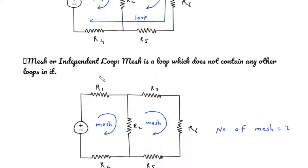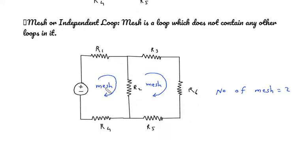What is mesh? Mesh or independent loop. Mesh is a loop which does not contain any other loops in it. So this is a mesh. This is also a mesh. So there are total two number of mesh in this circuit.